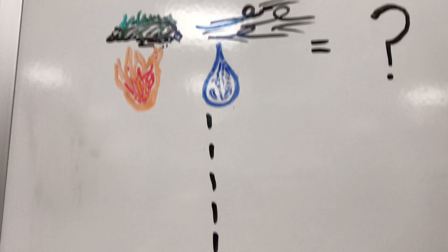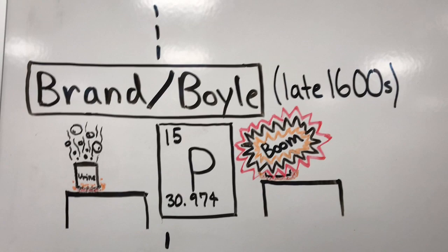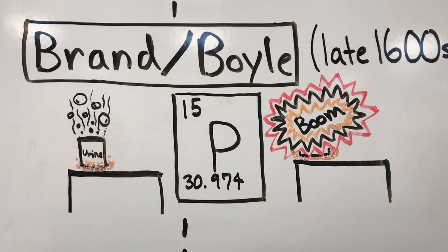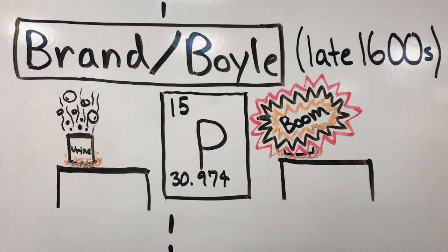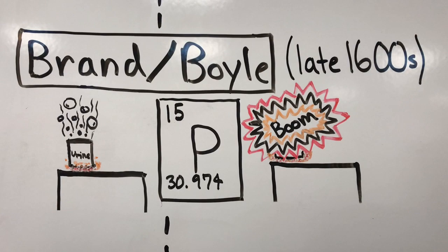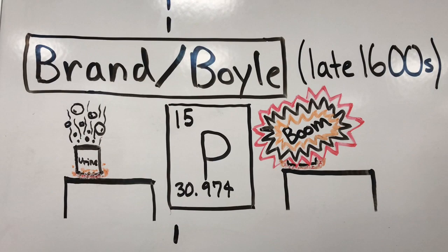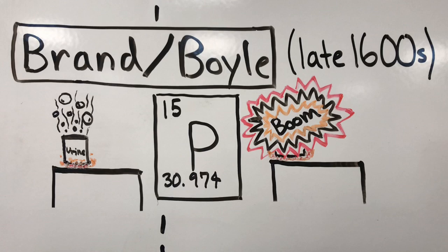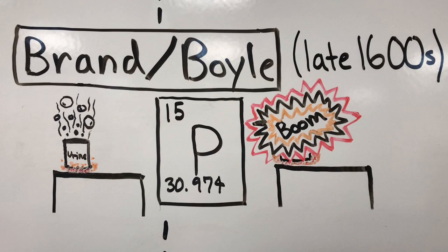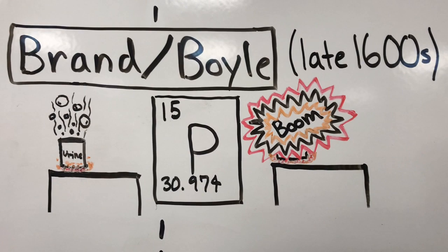His theories would later, many years later, be debunked when the discovery of elements occurred. A scientist by the name of Brand was boiling urine when all of a sudden there was combustion from phosphorus gas that had been released into the air. Another scientist by the name of Boyle, also around the same period as Brand, found the same discovery, and the element of phosphorus was found. Over the passage of the next 200 years or so, there were many more elements discovered.